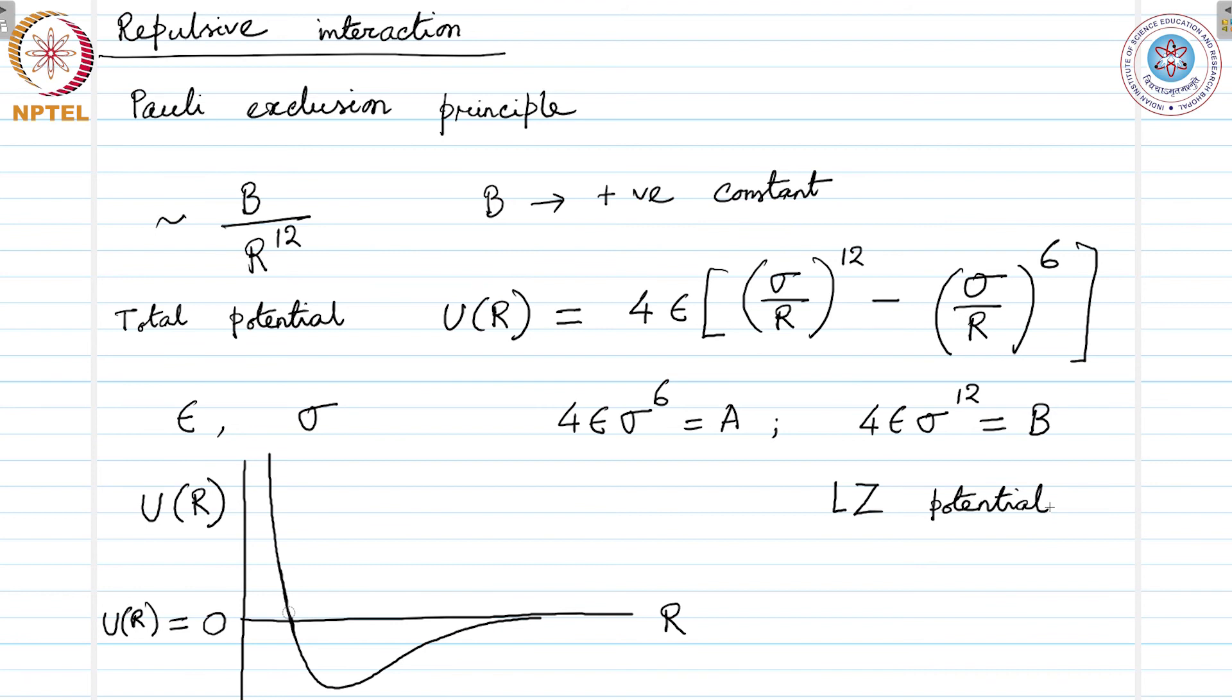There is no zero point energy and no Pauli exclusion principle in classical mechanics. Therefore, this attractive and repulsive potential are both purely of quantum origin.